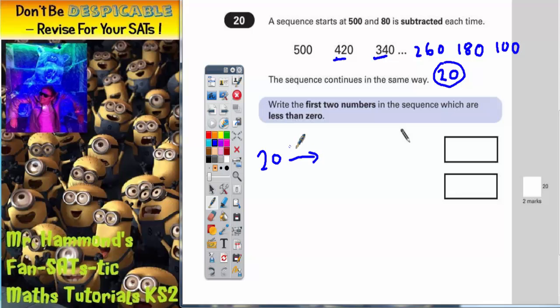So if we take 20 off, that will get us to 0. But we've got to take 80 off altogether. Now if we've already done 20, that means we'll need to take another 60 off. Because 20 and 60 makes our 80. So if we're on 0 and we take 60 off, that's going to send us down to negative 60. So that's the first answer in the answer box there, negative 60.